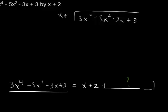We want to multiply x plus 2 by our other polynomial and end up getting 3x to the 4th minus 5x squared minus 3x plus 3. It's also important to note that we have 0x cubed. This is a squared term, this is a 4th power term, so we need to make sure we remember there are no x cubed terms here, or 0 of them.